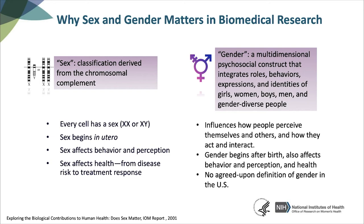Now that we've covered facilitators and barriers to recruitment for a range of demographics, these next slides will focus specifically on sex and gender in health and disease and in biomedical research. Inclusion of women is critical because of sex and gender differences found in certain diseases, and so they're crucial variables to consider when conducting research. Though the terms sex and gender are often used interchangeably, sex is the classification of living things as male or female according to their reproductive organs and functions assigned by chromosomal complement, according to the Institute of Medicine report published in 2001. Every cell has a sex — it's either XX or XY. Sex begins in utero and affects health and disease from risk to treatment response.